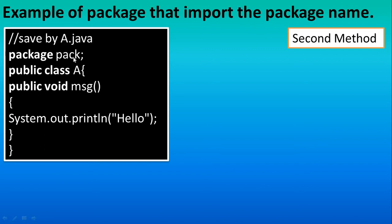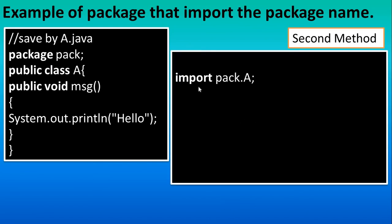Suppose inside the package you have three classes but you want to access only one particular class — in that case this concept is used. You write 'import pack.A', so you can access the content from class A which is available in pack. If you write dot star, all classes in the package are accessible, but if you want only a particular class, you write dot A.